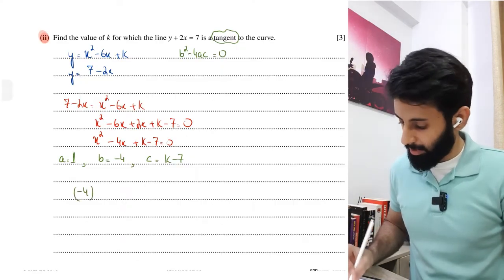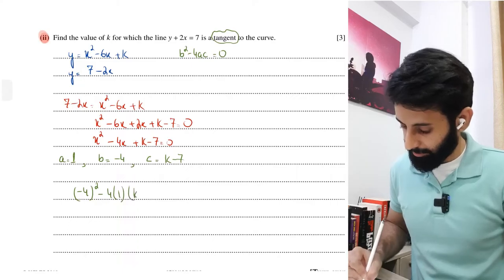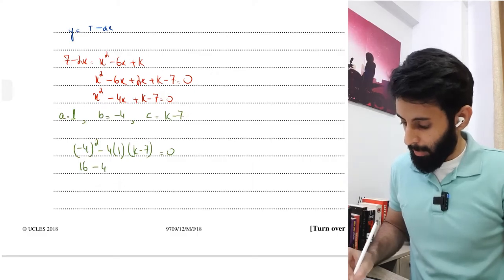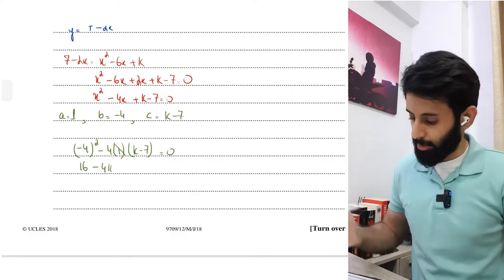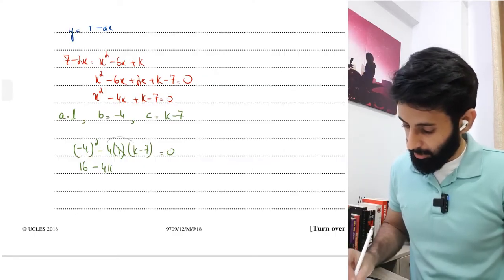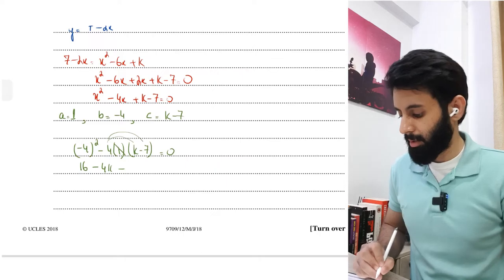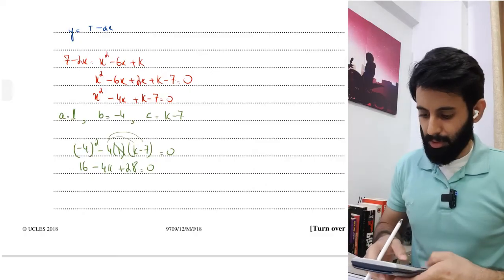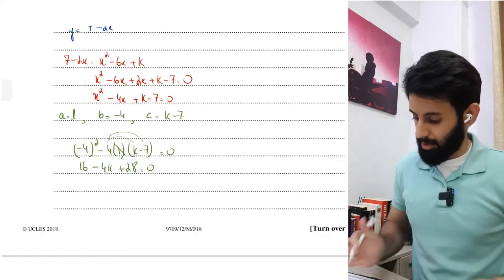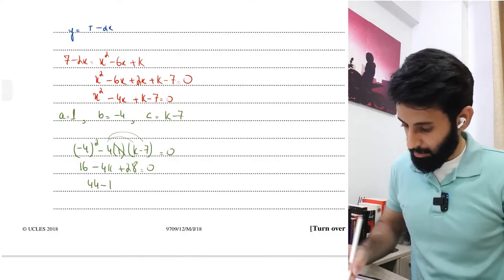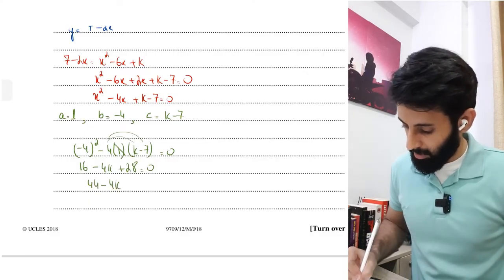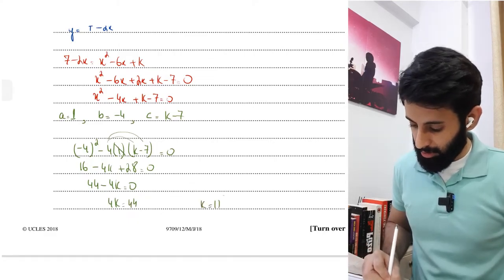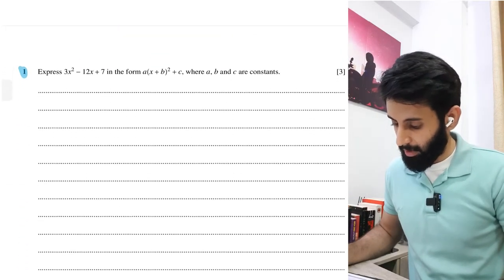Since it's a tangent, discriminant = 0. So: (-4)² - 4(1)(k - 7) = 0, giving 16 - 4(k - 7) = 0. Expanding: 16 - 4k + 28 = 0, so 44 - 4k = 0, which means 4k = 44, leading to k = 11. That is the final answer.